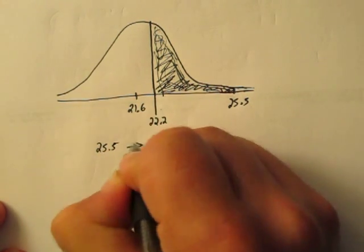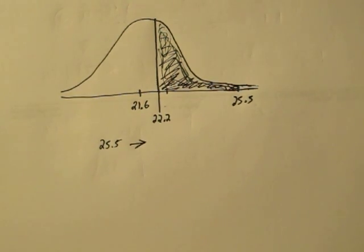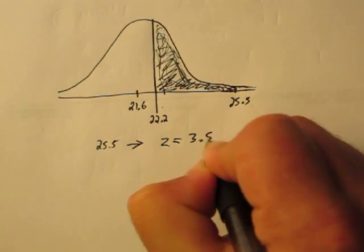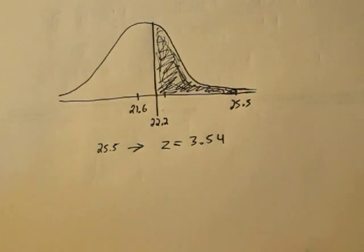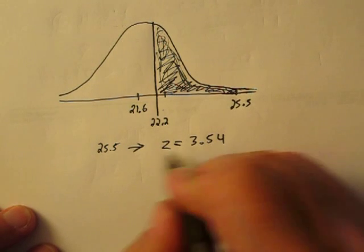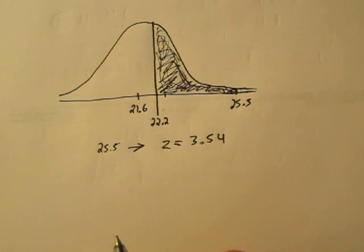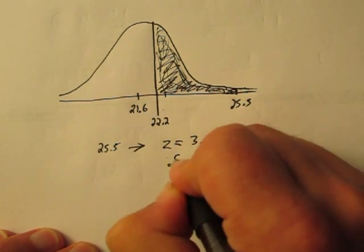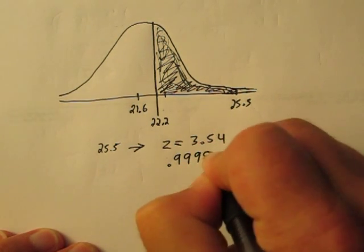The 25.5 is going to lead us to a z-score of 3.54. And if we look up the area of 3.54, it maxes out on our scale. So we end up with 0.9999.